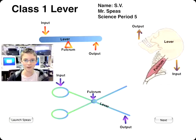The first one here is a class one lever. A good example of this would be scissors with the fulcrum in the middle and the input and output at both ends.